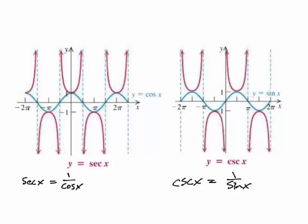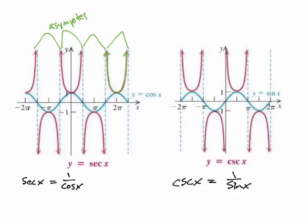To graph secant and cosecant, we simply graph their reciprocals first. The blue curve shown is the cosine or sine graph. From there, we add asymptote dotted lines to both graphs. Then, off of the max and min values from the cosine or sine graph, we draw the secant or cosecant curves, which trend toward the asymptote lines.